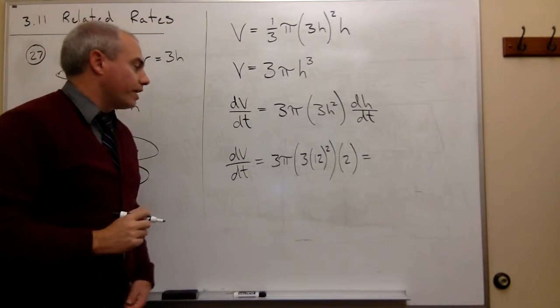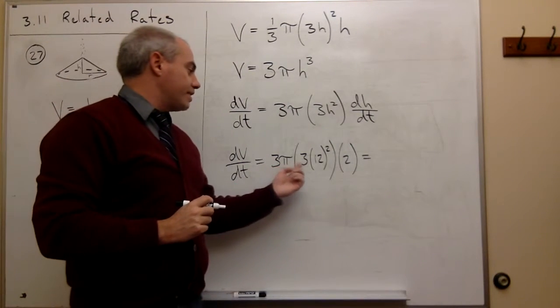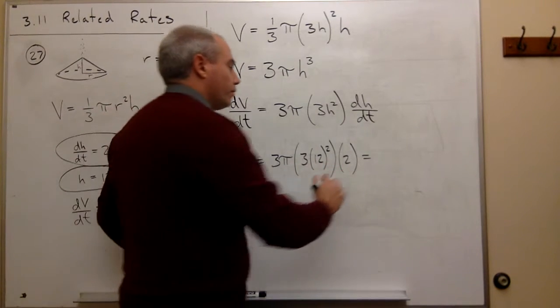times three times h which is 12 squared times dh/dt, but dh/dt is two. So let's multiply this all together and see what we get. We have a three times a three which is nine times a two which is 18